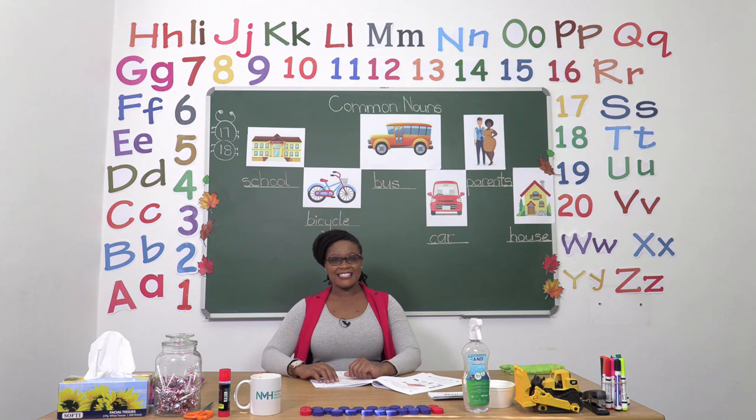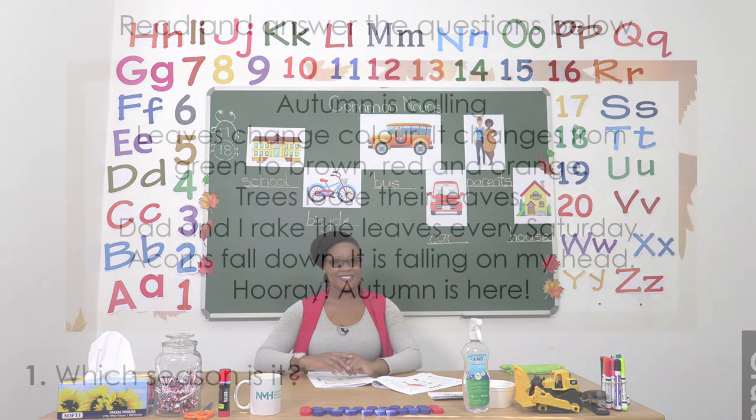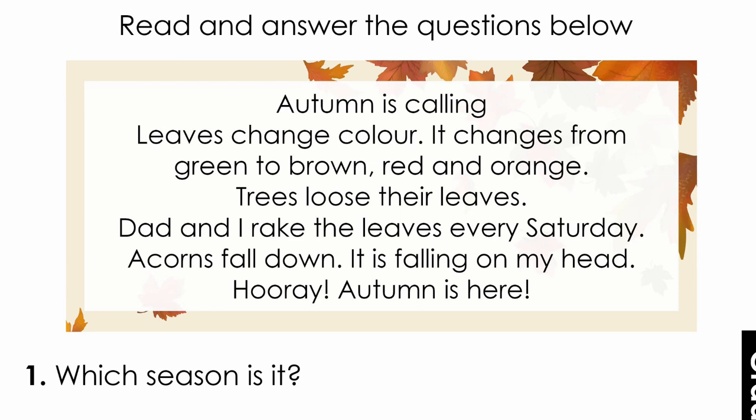For our first exercise boys and girls, let's turn to page 17. On page 17 we are going to be reading a short passage that we're going to use to answer the questions below. Remember when we are reading a short passage we need to read it three times. The first time is so that we understand what the story is talking about. The second time is so that we can find our answers. And the third time is to make sure that our answers are correct. Now let us start by reading it the first time.